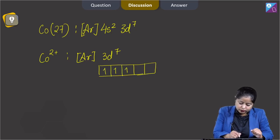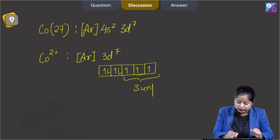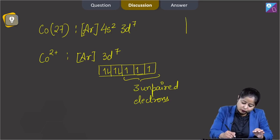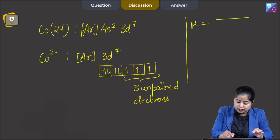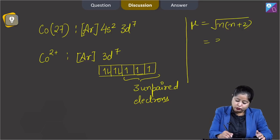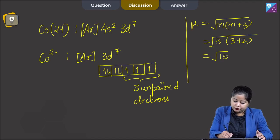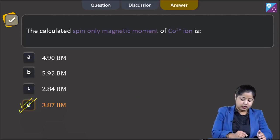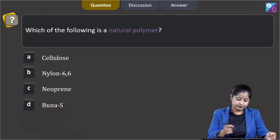Filling the 3d⁷ orbitals: 1, 2, 3, 4, 5, 6, 7 — we get 3 unpaired electrons. Using the formula μ = √(n(n+2)), where n = 3: μ = √(3×5) = √15 = 3.87 BM. The correct answer is option D.